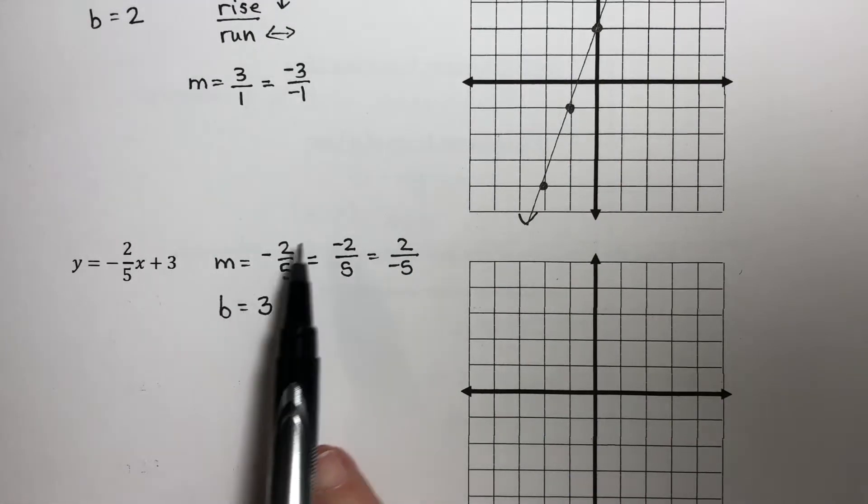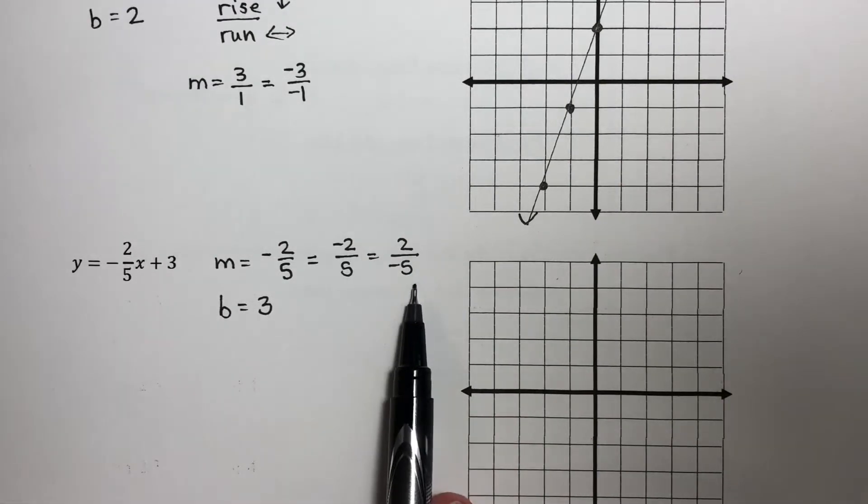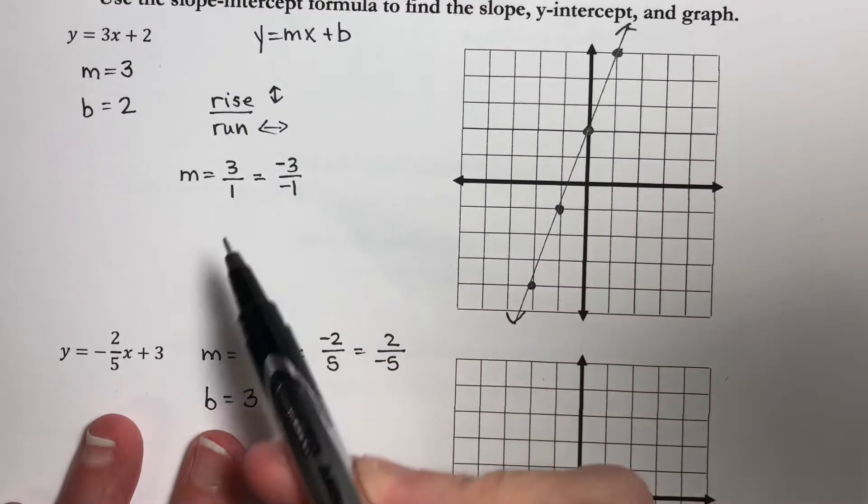So when you have a negative fraction, the negative can be in the top or in the bottom, just not both, because if it's both, then you end up with a positive number.